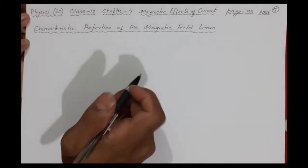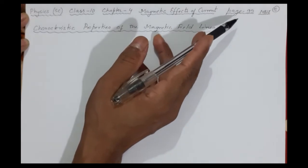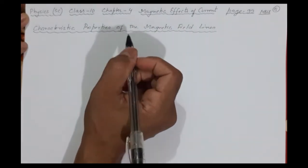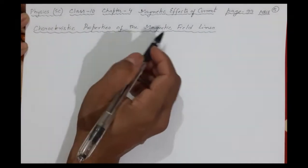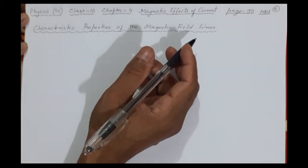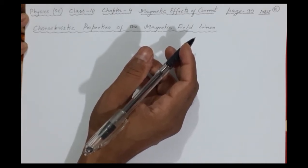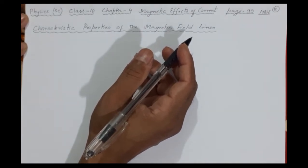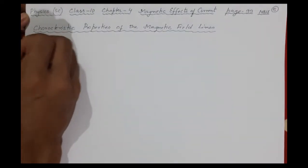Welcome to the SD online classes. This is Physics Class 10, Chapter 4 - Magnetic Effects of Current, page number 99 of your MBAC textbook. This is the fifth lecture. Here we will discuss what are the characteristic properties of the magnetic field lines. We have previously discussed what magnetic field lines are, how they are generated, whether they are real or imaginary, and how they are useful. Now we will understand what are the properties, what they signify, and what things they exhibit.